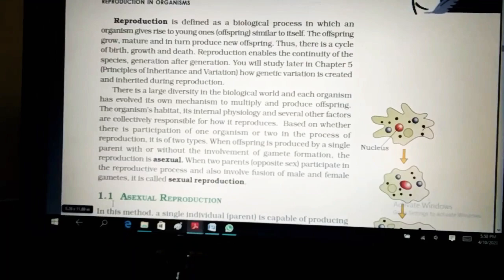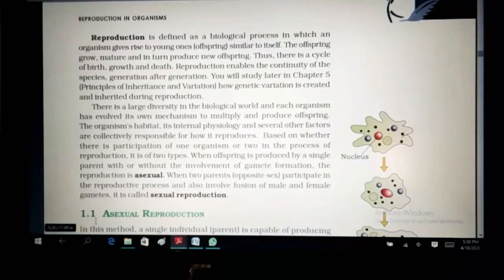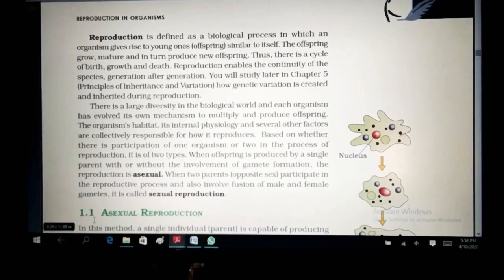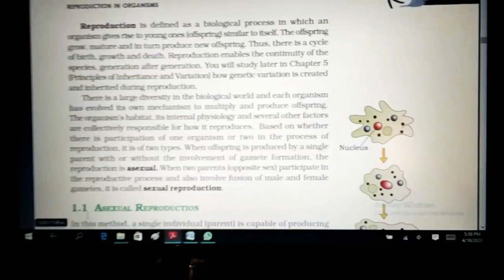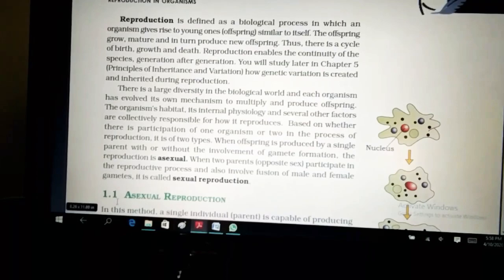Based on whether there is participation of one organism or the two in the process of reproduction, it is of two types. When offsprings is produced by a single parent with or without the involvement of gamete formation, it is called as asexual reproduction. When two parents of opposite sex participate in the reproductive process and also involve fusion of male and female gametes, it is called as the sexual reproduction. They have been given that there are mainly two kinds of reproduction depending upon the involvement of the number of organisms that are present.